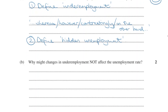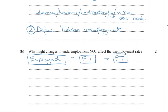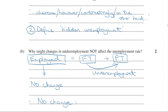Now let's look at part B. It asks us to account for why changes in underemployment might not affect the unemployment rate. This is because whether a worker is working full-time or part-time, they're counted as employed. So if a full-time worker is given less hours, they'll contribute to the underemployment rate but not the unemployment rate, as they're still employed.